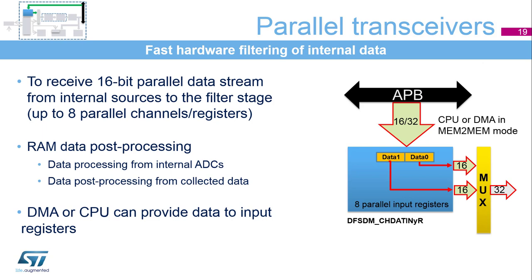Parallel transceivers provide a parallel input from internal data sources, for example from memory buffers. Parallel inputs are usually used for fast hardware filtering of data from the internal ADC or any other data collected from a communication peripheral or algorithm. When DMA is used for processing of memory buffers, it needs to be configured in memory-to-memory transfer mode.